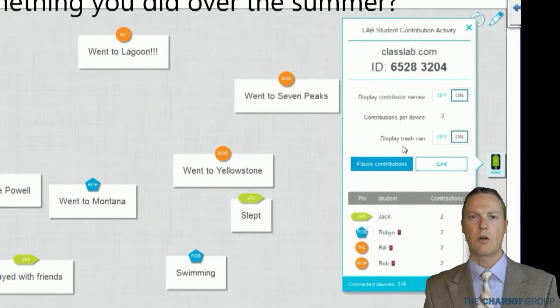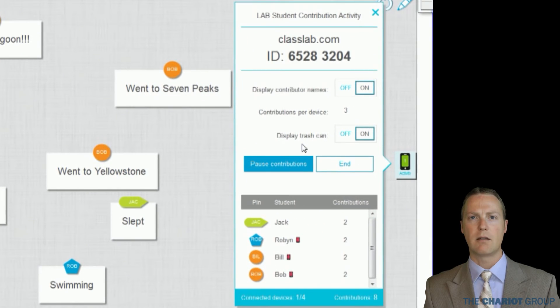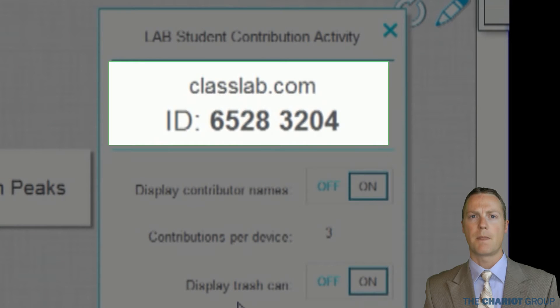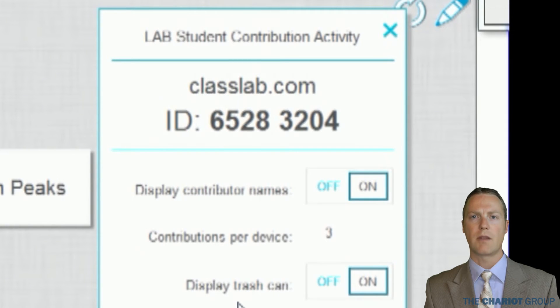The activity control panel appears on the right of the activity. This has a lot of information and controls in it, so let's go through these so you understand what they all do. At the top is a web address and the activity ID. This tells the students where to go on their device and the activity ID to be able to join the activity.